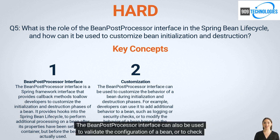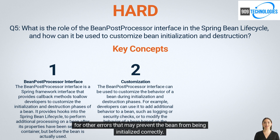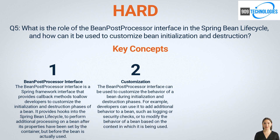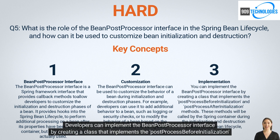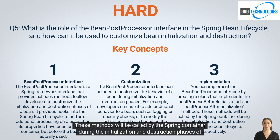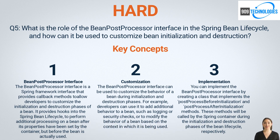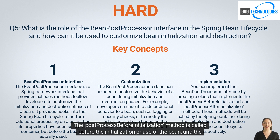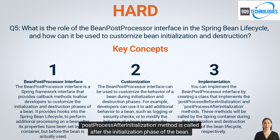The BeanPostProcessor interface can also be used to validate the configuration of a bean or check for errors that may prevent the bean from being initialized correctly. Developers implement this interface by creating a class with postProcessBeforeInitialization and postProcessAfterInitialization methods. These methods are called by the Spring container during the initialization phase — postProcessBeforeInitialization is called before initialization, and postProcessAfterInitialization is called after initialization.